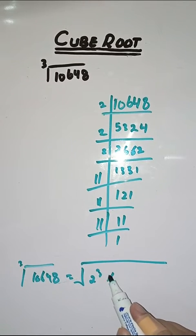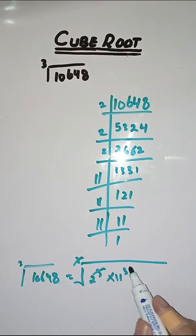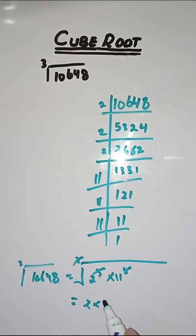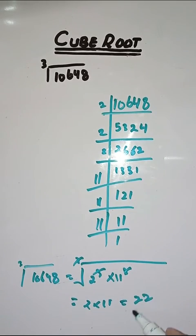Which are 2 cubed into 11 cubed. So this cube root and cubes cancel down. We are left with 2 into 11 which is equal to 22. So cube root of 10,648 is equal to 22.